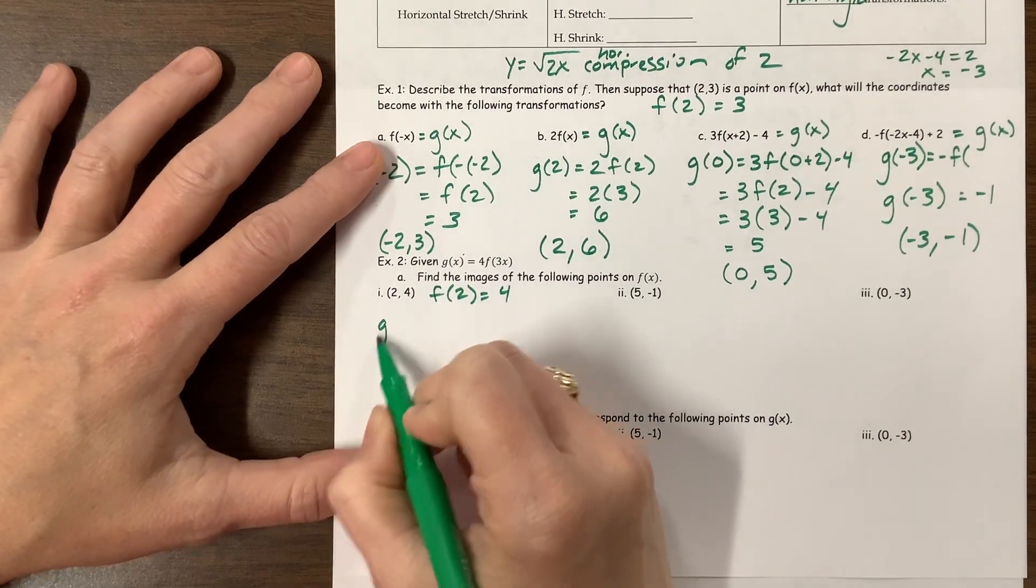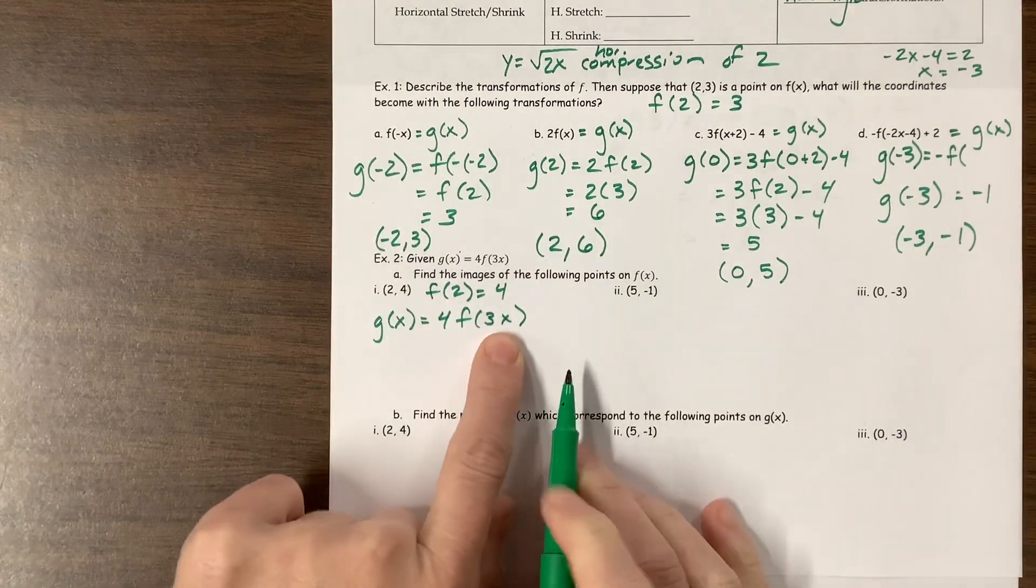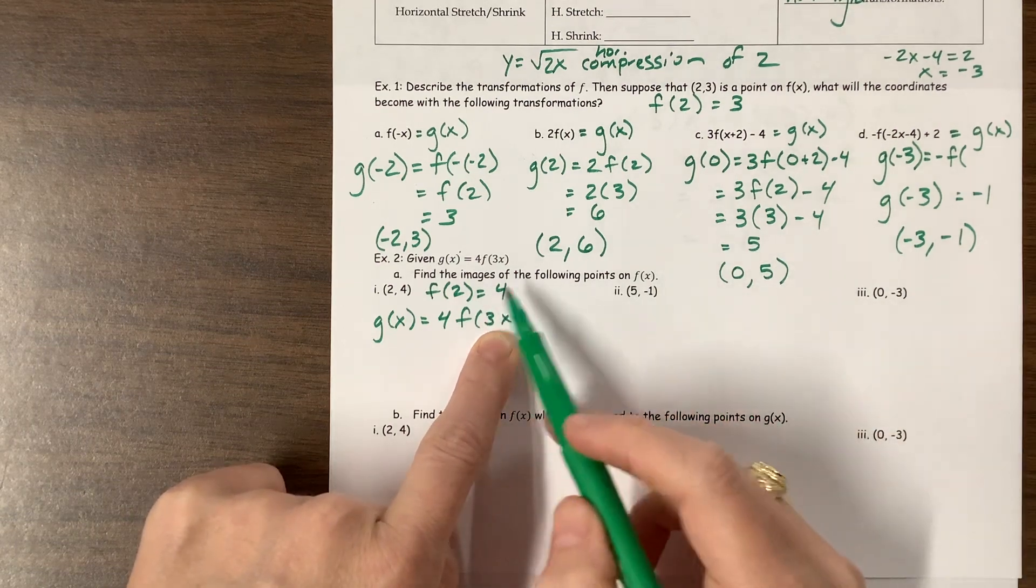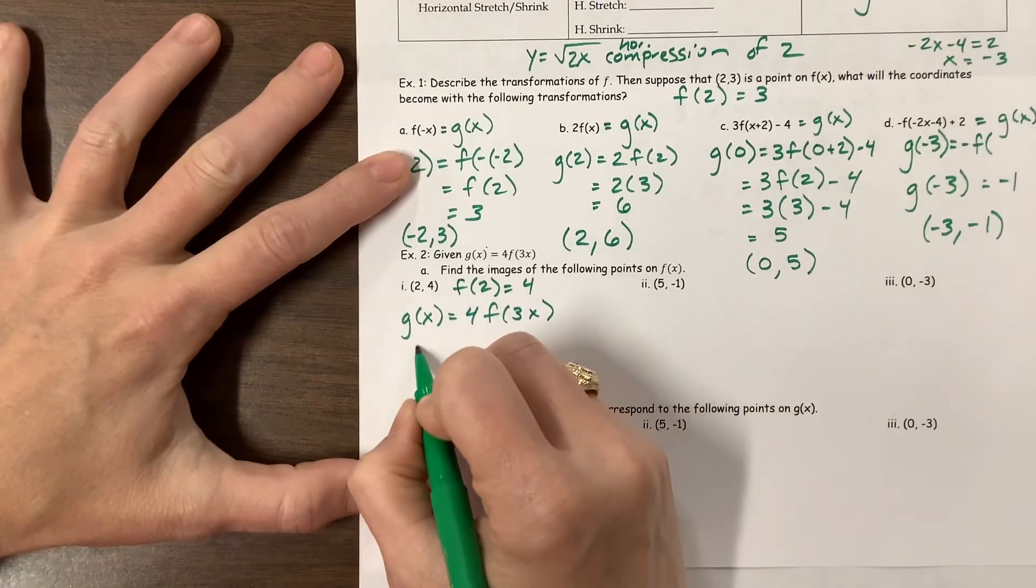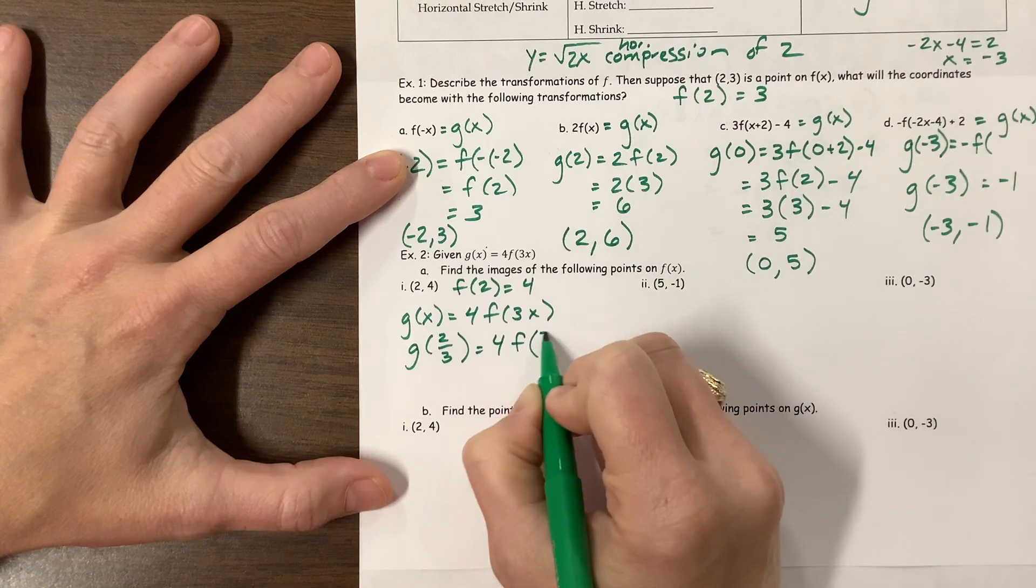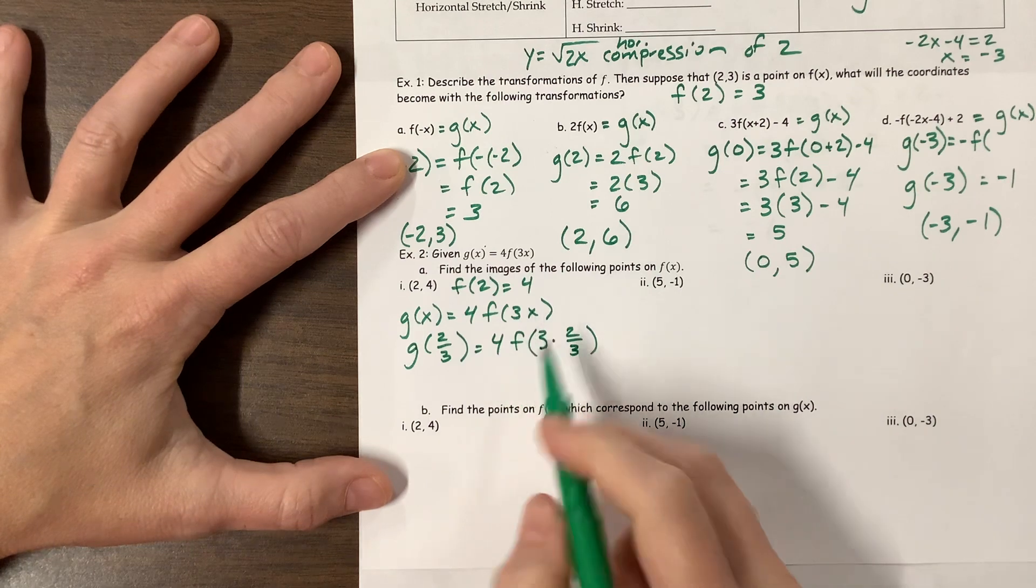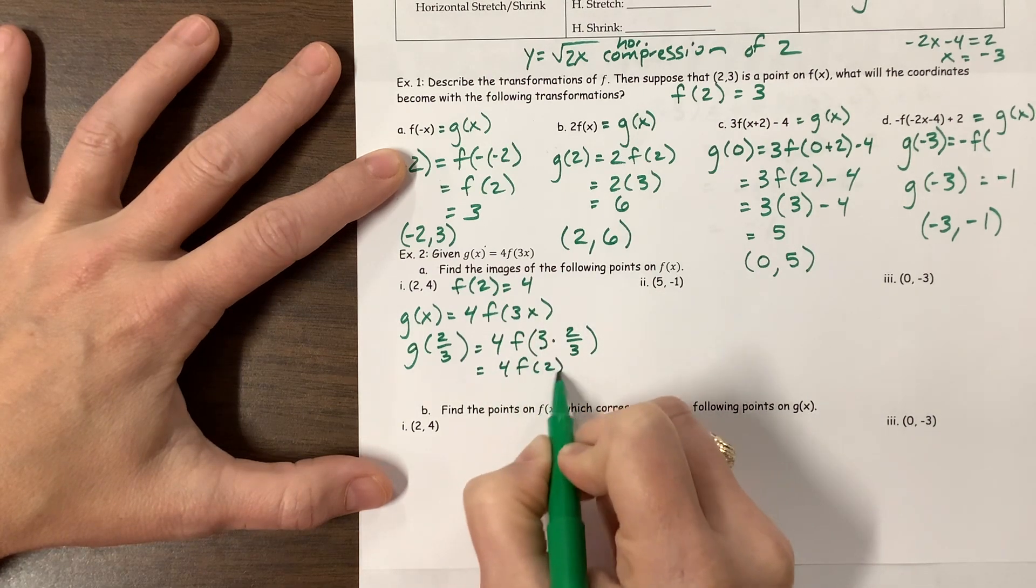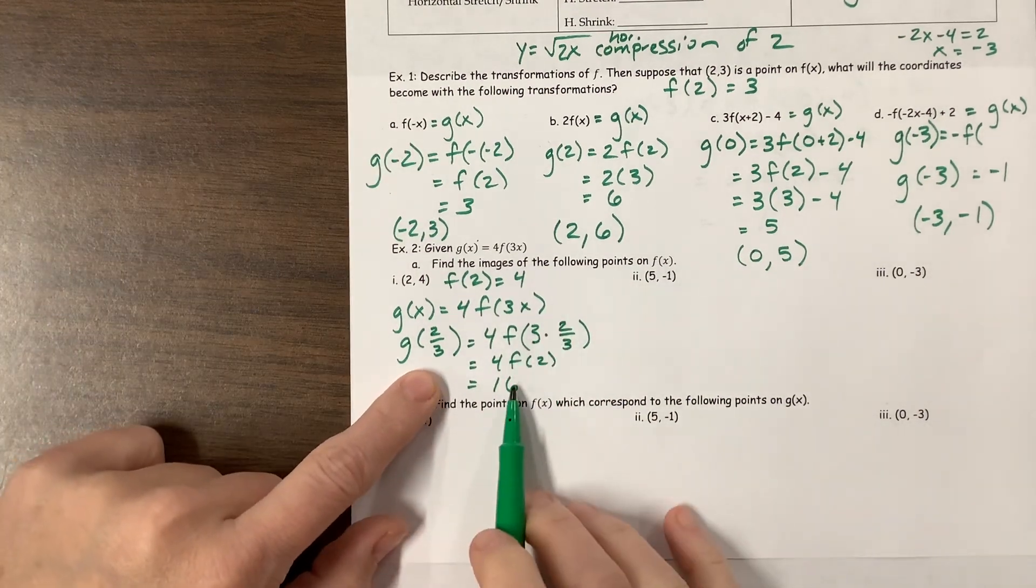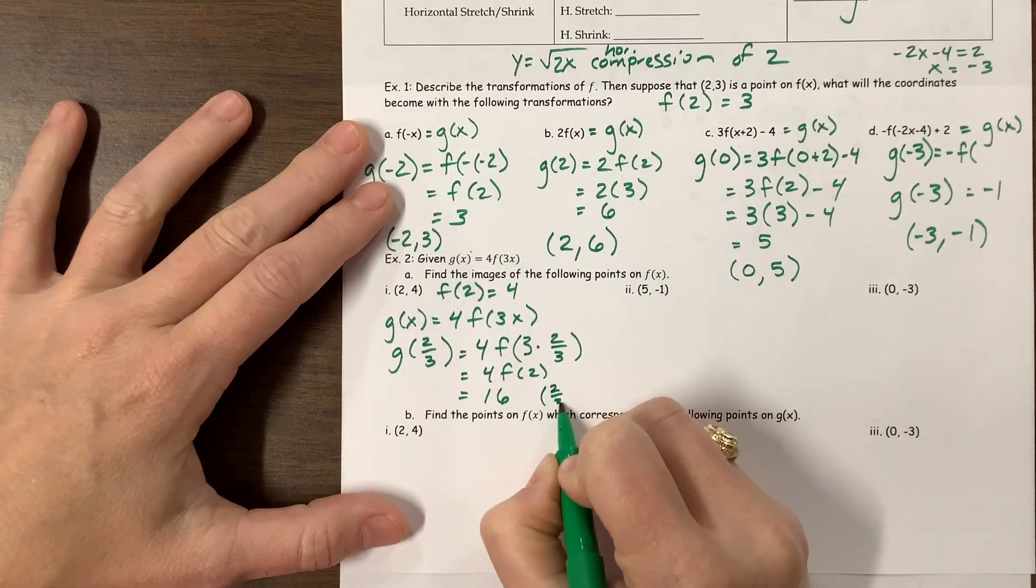Okay, but what do we know? We know that g of x is equal to 4 times f of 3x. So I need to figure out what do I plug in here so that I can find an f of 2, because that's all I know. So I want 2 thirds so that my 3s cancel. So g of 2 thirds would be equal to 4 times f of 3 times 2 thirds. That's f of 2, so this is going to be equal to 4 times f of 2. f of 2 is 4. 4 times 4 is 16. I ran out of space, but there we go. So the point that they want is the point 2 thirds comma 16.